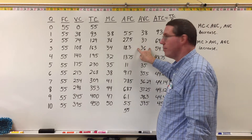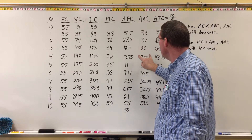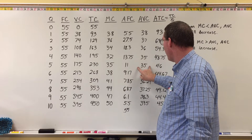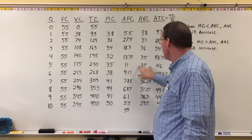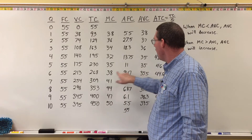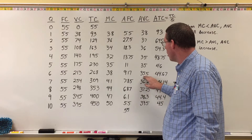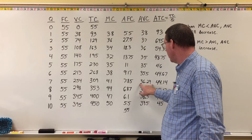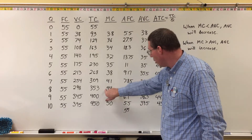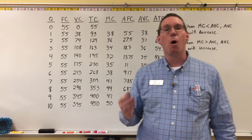At unit two, average variable cost is 37 and marginal cost is 36. Since marginal cost is less than average variable cost, AVC decreases — it goes from 37 down to 36. At the next unit, marginal cost is still smaller, so AVC continues to decrease down to 35. But when they're the same, AVC doesn't change. At unit six, marginal cost is 38 and AVC is 35.5 — marginal cost is now larger, so AVC rises to 36.29, then to 37.25, and continues increasing.